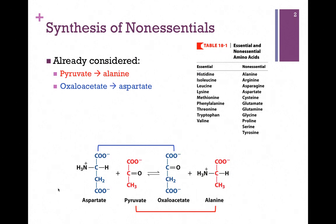We start with the amino acid aspartate and the keto acid pyruvate, and we form the keto acid oxaloacetate and the amino acid alanine. In other words, the precursor for aspartate is oxaloacetate, and the precursor for alanine is pyruvate. So in this one transaminase reaction, we can synthesize either alanine or aspartate depending on the needs of the cell.